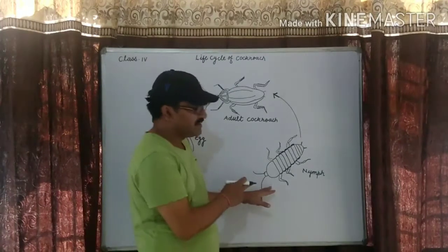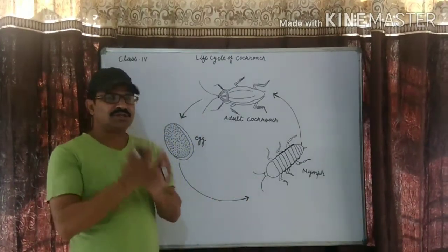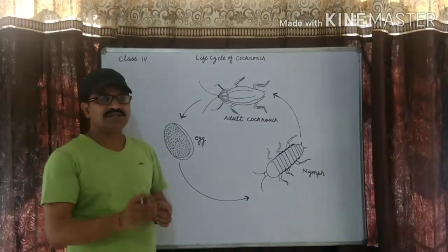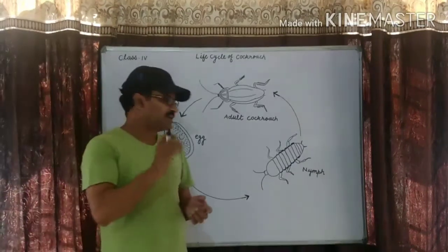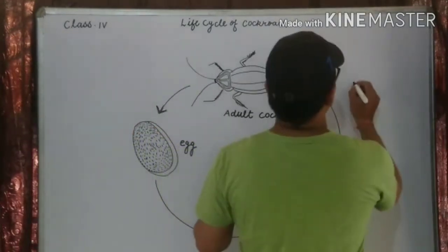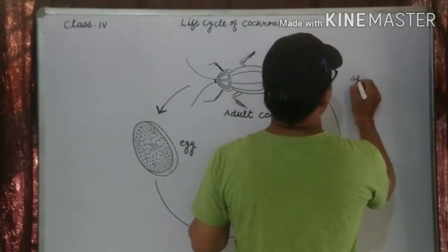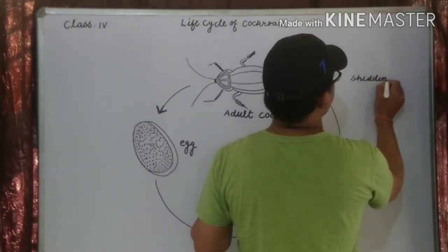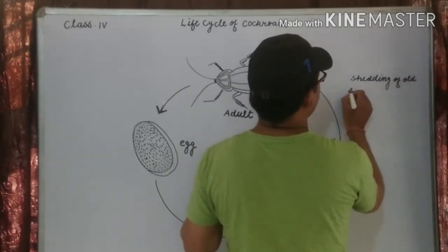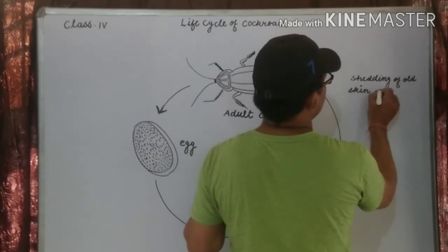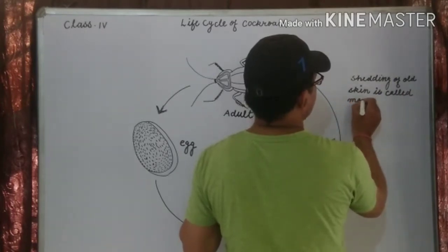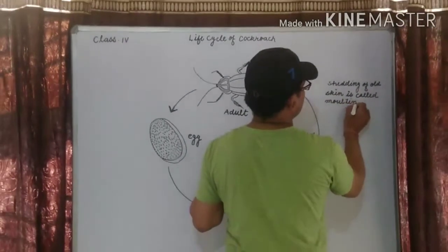The nymph sheds its skin several times and changes into an adult. This process is known as molting. Shedding of old skin is called molting.